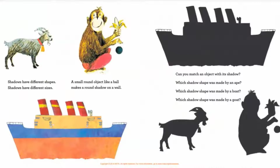Shadows have different shapes. Shadows have different sizes. A small round object like a ball makes a round shadow on a wall. Can you match an object with its shadow? Which shadow shape was made by an ape? Which shadow shape was made by a boat? Which shadow shape was made by a goat?